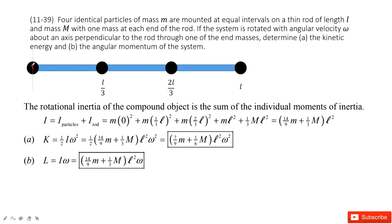From the particle, the first mass is zero because it's just along the rotation axis. So the distance is zero. This distance is L divided by three. This distance is two L divided by three. This distance is L.